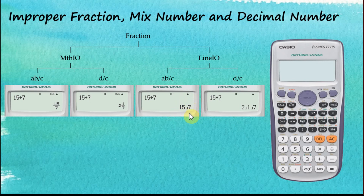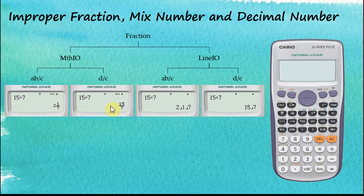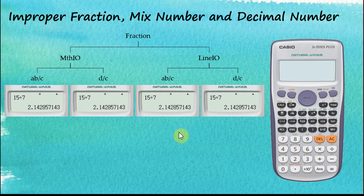So Shift+SD converts mixed numbers to improper fractions and improper fractions to mixed numbers. If we tap Shift+SD again, the improper fractions change back to mixed numbers and mixed numbers back to improper fractions. If we want to display all answers as decimal numbers, we tap the SD button and everything becomes decimal numbers. In summary: the SD button converts fractions to decimal numbers and decimal numbers to fractions; the Shift+SD button converts improper fractions to mixed numbers, mixed numbers to improper fractions, and decimal numbers to fractions.